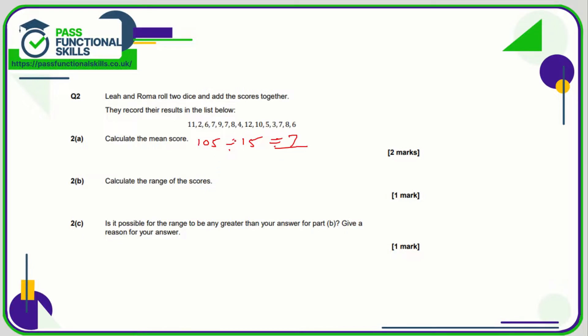The range is again the difference between the highest and the lowest. The highest is 12 and the lowest is 2, and 12 take away 2 is 10, so the range is 10.